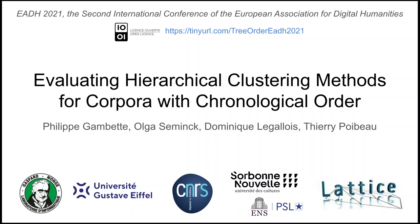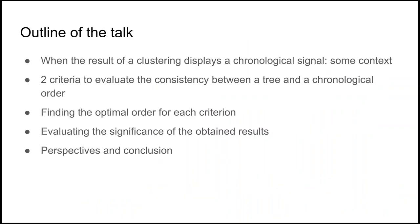So the idea is to try to evaluate hierarchical clustering methods for corpora with chronological order. Are we able to detect this chronological order, and how? So first, I'll give you some elements of context about this question, see when it can happen in digital humanities, then I'll introduce the two criteria that we propose to evaluate the consistency between the tree that we obtain from a clustering method and a chronological order on the leaves.